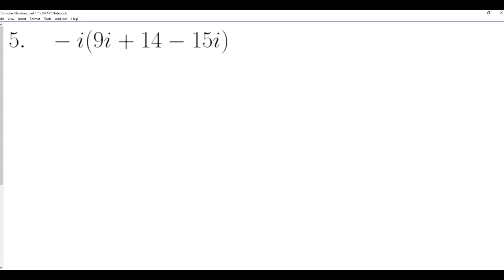Problem five: negative i times the quantity 9i plus 14 minus 15i. First, simplify inside the parentheses: 9i minus 15i equals negative 6i. So we have negative i times the quantity 14 minus 6i. That's simplifying.